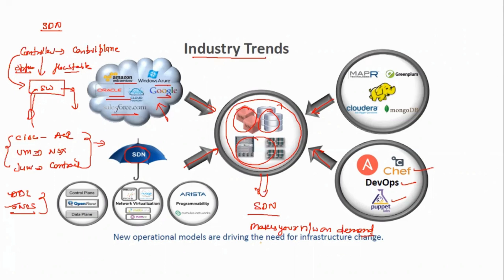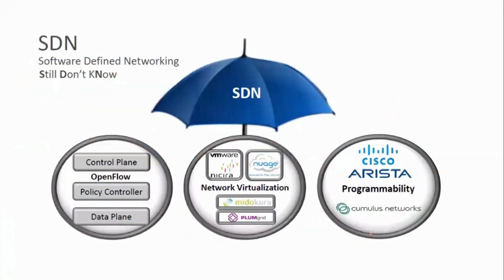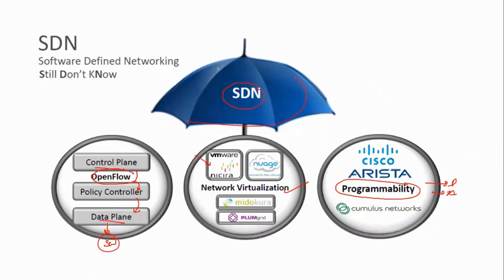SDN works with the control plane using OpenFlow, then a policy controller, which sends information to the data plane on the switches. It can also use network virtualization — for example, if you have VMware or a Nexus you can virtualize it. Programmability tools like Python and Ansible can also be integrated as part of the SDN solution.